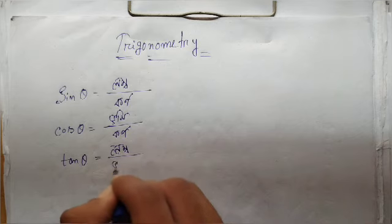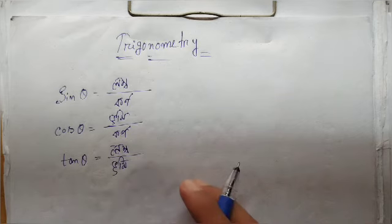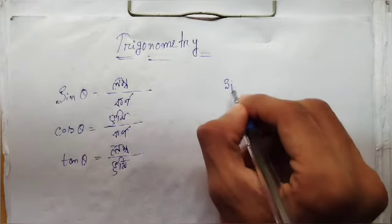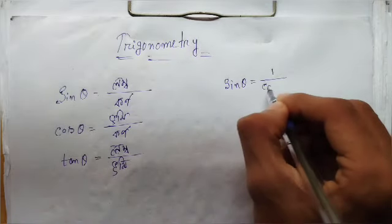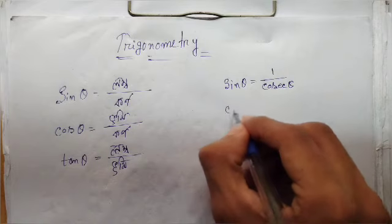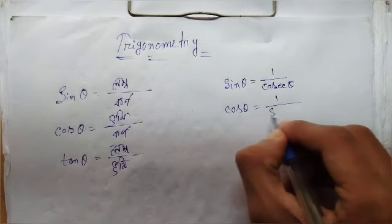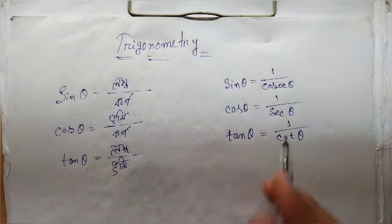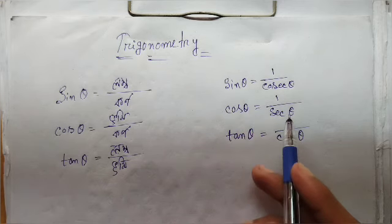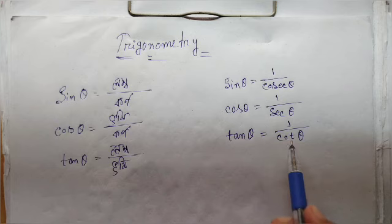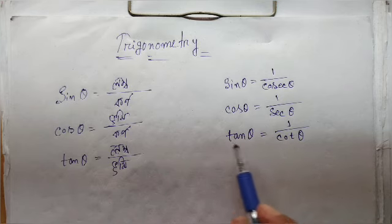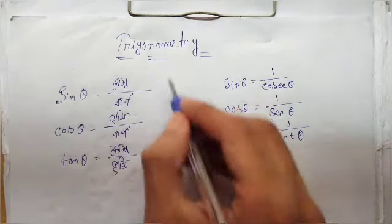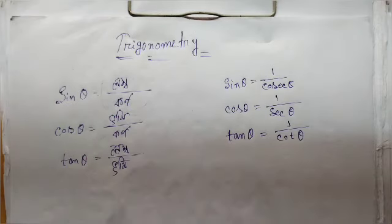Sin theta means 1 by cos theta. Cos theta means 1 by sec theta. Tan theta means 1 by cos theta. And cosec theta means 1 by sin theta, sec theta means 1 by cos theta, and cot theta means 1 by tan theta. These are most important.